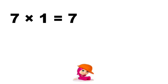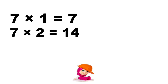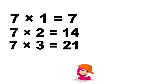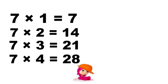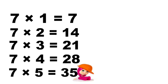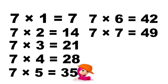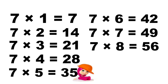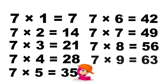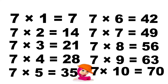Seven ones are seven, seven twos are fourteen, seven threes are twenty-one, seven fours are twenty-eight, seven fives are thirty-five, seven sixes are forty-two, seven sevens are forty-nine, seven eights are fifty-six, seven nines are sixty-three, seven tens are seventy.